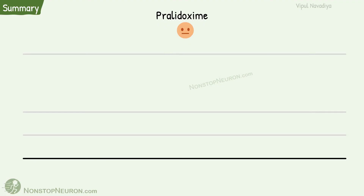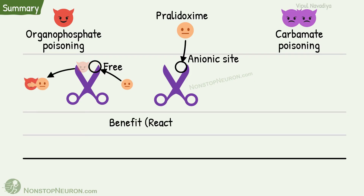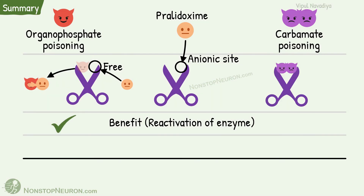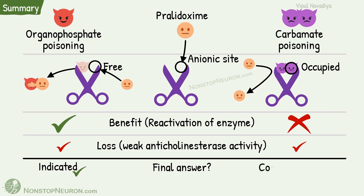So that was all the detail. As a summary, let's make an account of benefit and loss with pralidoxime in organophosphate and carbamate poisoning. For pralidoxime to work, the anionic site of the enzyme must be free. In organophosphate poisoning, it is free, so pralidoxime can bind to this site and take away the organophosphate molecule — the benefit of enzyme reactivation is present. But in carbamate poisoning, the anionic site is occupied and pralidoxime cannot work on such enzymes, so there is no reactivation of carbamylated enzyme. A small loss due to weak anticholinesterase activity is present in both cases. The final answer is: pralidoxime is indicated in organophosphate poisoning because the benefit is much greater than the loss, but it is contraindicated in carbamate poisoning because there is no benefit — no reactivation of enzyme — and there is only loss. So they are contraindicated.